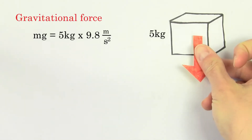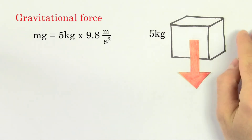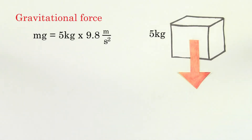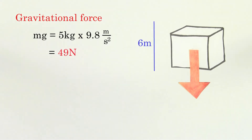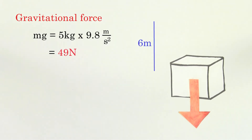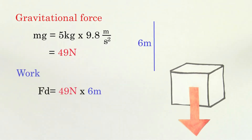For instance, the gravitational force on a five kilogram mass is 49 newtons. If the mass moves downwards by an amount of six meters, the work done by gravity is going to be 294 joules.